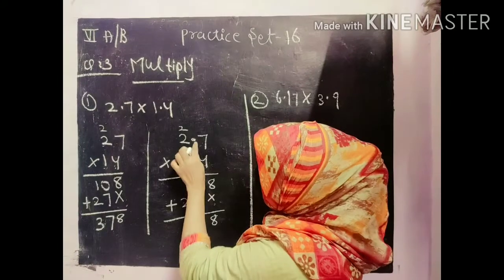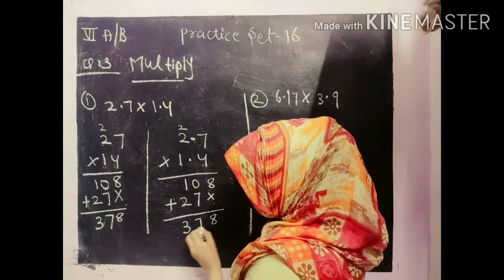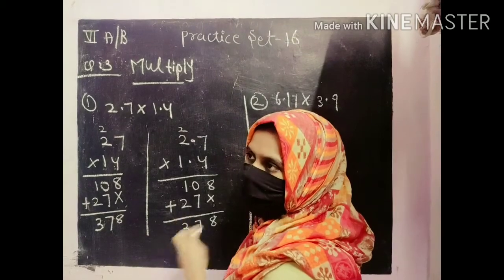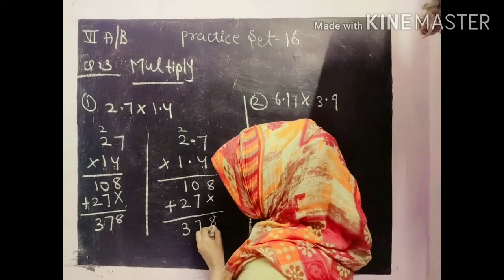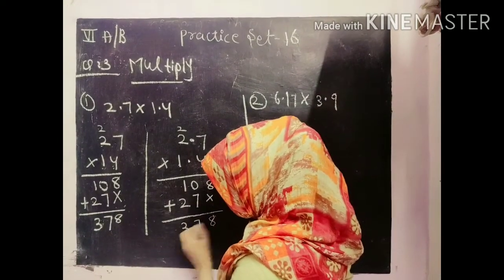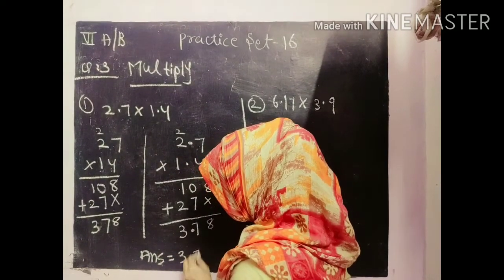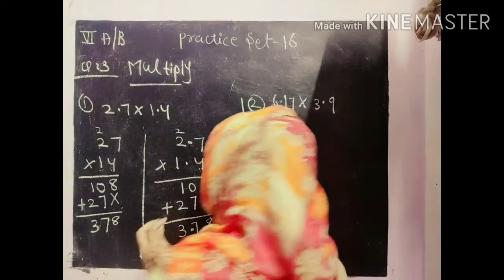So 1 and 2. So we will put after 2 numbers here. Always which side you will go? From your right hand side. 1 and 2. So here what will be the answer? Answer will be 3.78. Okay.